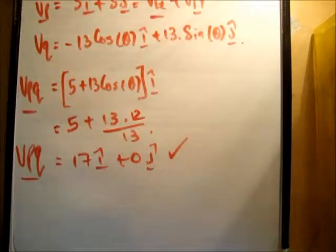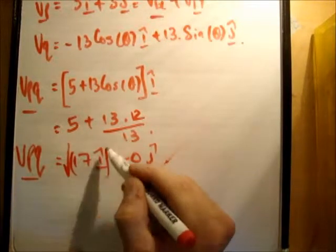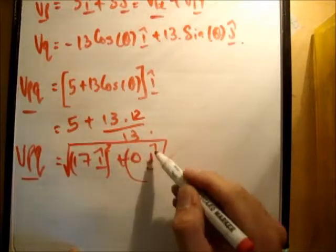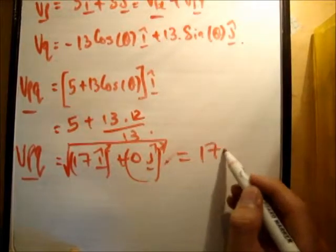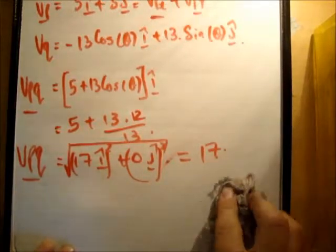And we need to get the time. Now, what's the magnitude of VPQ? Well, if you work it out here, it's going to be the square root of this squared plus this squared. And that's just going to be 17 either way. So the magnitude of VPQ is equal to 17.